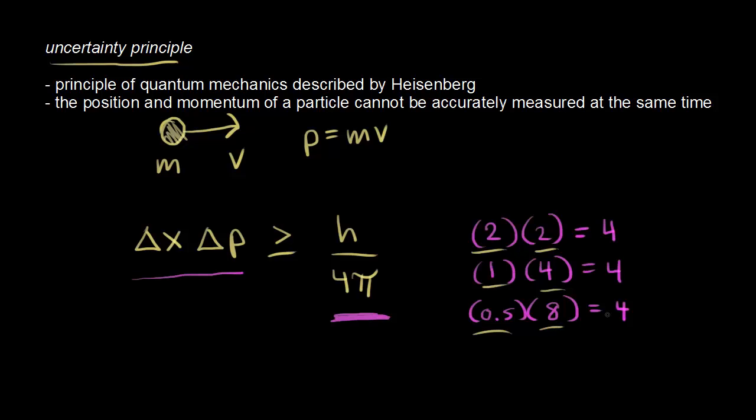So as you decrease the uncertainty in position, you increase the uncertainty in momentum. The more accurately you know the position of a particle, the less accurately you know the momentum — and that's the idea of the uncertainty principle.